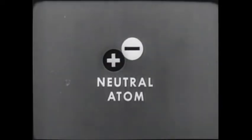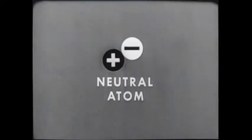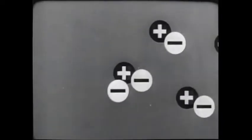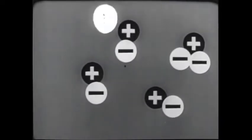This represents a neutral atom in electrical balance. Earlier we saw how an outside force can break an electron away from an atom and start an electron chain reaction, an electric current flow.